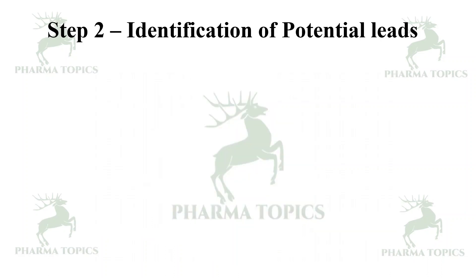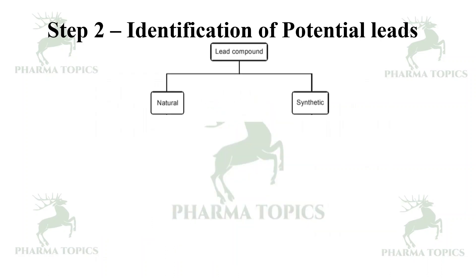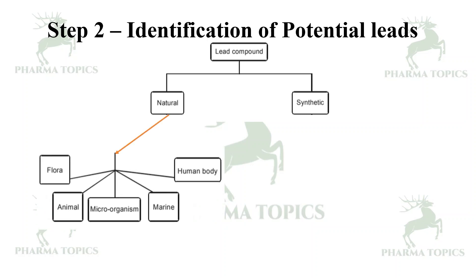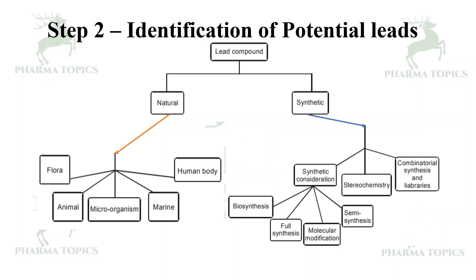Step two is identification of potential leads. Lead molecules may come from natural sources or synthetic sources. Natural sources include microbial flora, animals, marine sources, or metabolites of human origin. Synthetic sources may include biosynthesis, full synthesis, molecular modification, semi-synthesis, stereochemistry, combinatorial synthesis, and leads from database libraries.